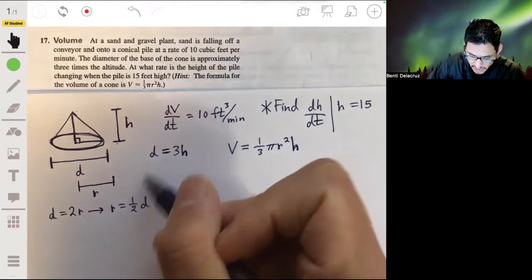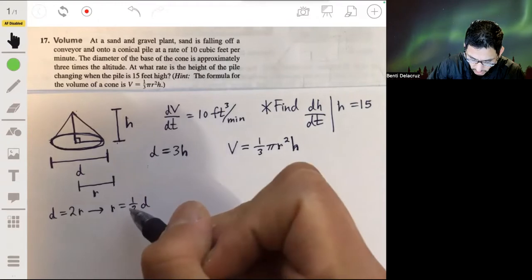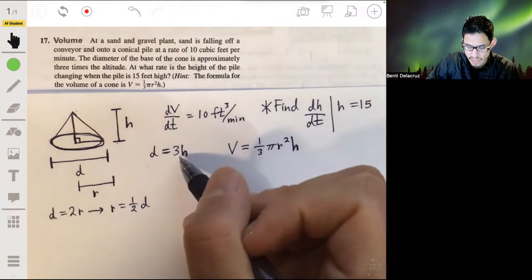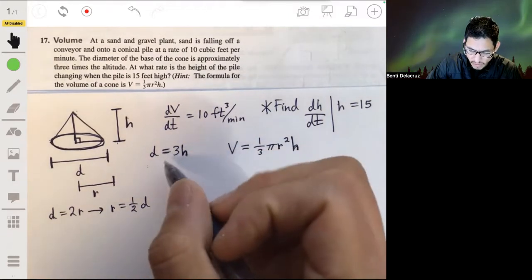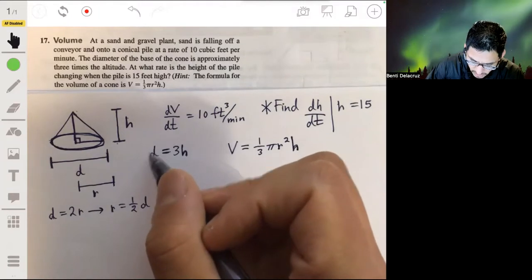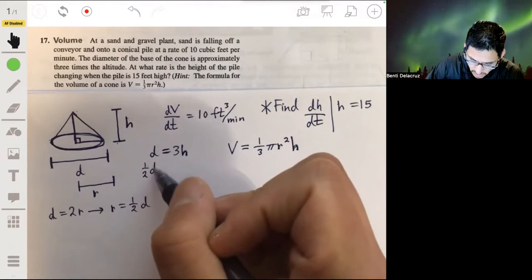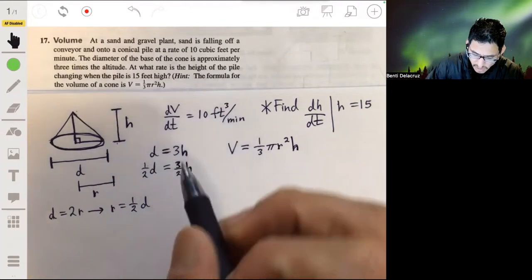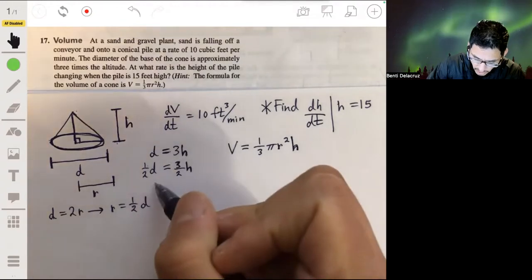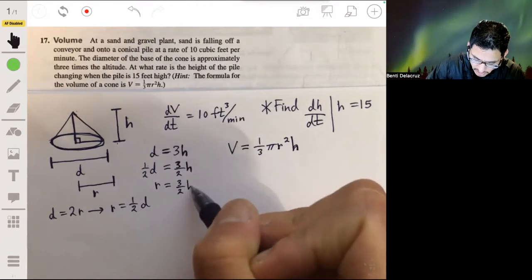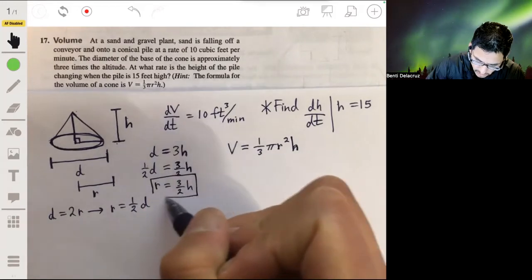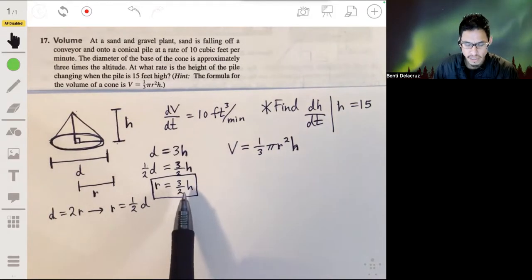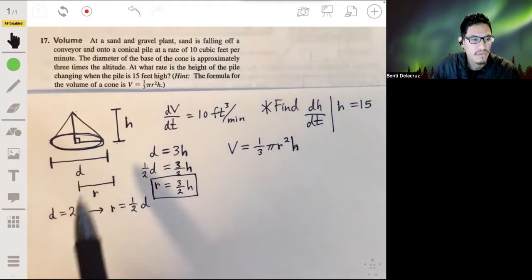So rewriting this, we can then say that r, or one half d, is equal to this divided by one half. So let's make this one half d, and that means one half d is three halves times h, and then we can replace one half d with r, because r is three halves h. The length of the radius is three halves times the length of the height of the cone.